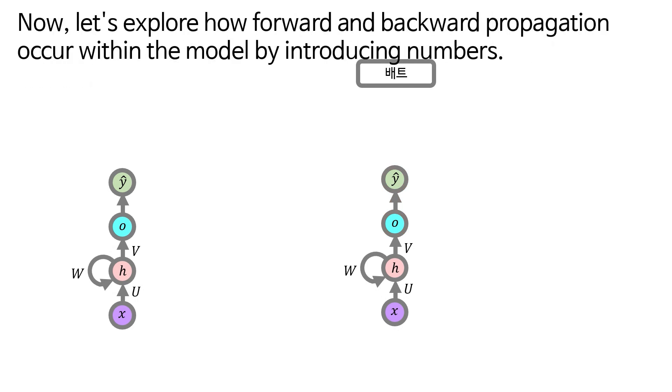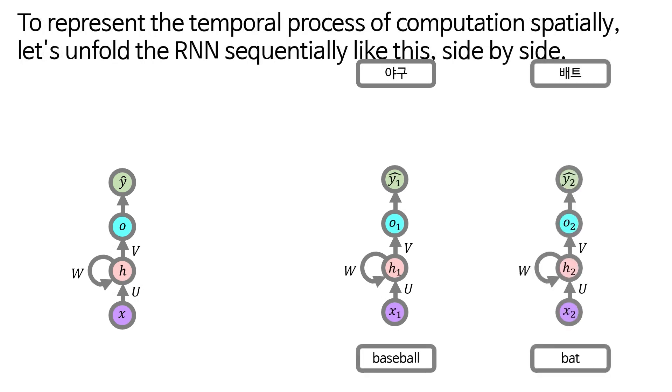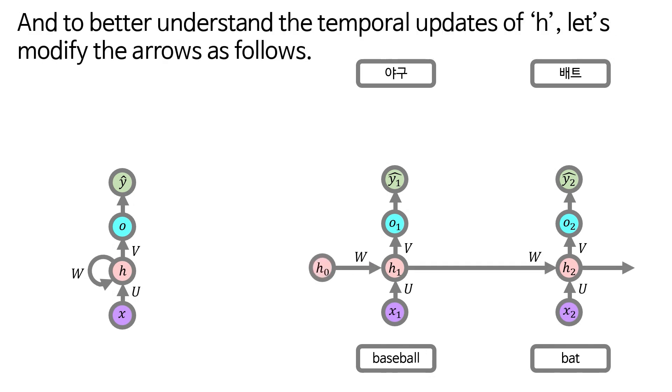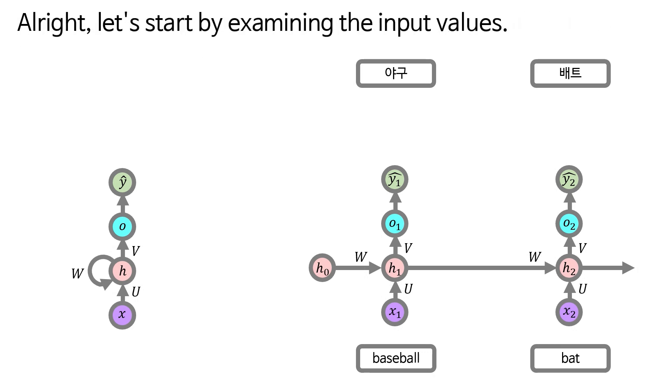Now, let's explore how forward and backward propagation occur within the model by introducing numbers. To represent the temporal process of computation spatially, let's unfold the RNN sequentially like this, side by side. And to better understand the temporal updates of h, let's modify the arrows as follows. Alright, let's start by examining the input values.